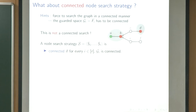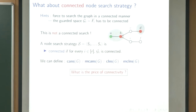This makes sense for applications like virus cleaning or cave searching, where you really cannot teleport. You can only explore one connected region at a time, preserving the connected space under control. So in connected search, for every step, the guarded space — the complement of the free locations — must be connected. We can define connected agile node search, monotone connected agile node search, connected lazy search, and monotone connected lazy search.